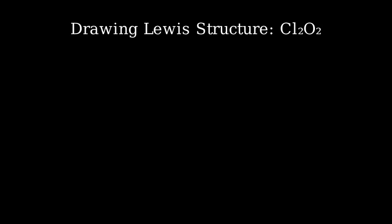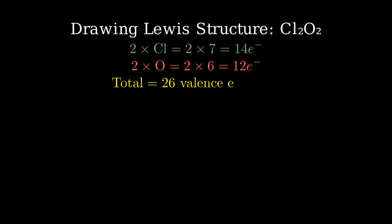First, let's count the total valence electrons. Each chlorine atom has 7 valence electrons, and each oxygen atom has 6 valence electrons. With 2 chlorine atoms and 2 oxygen atoms, that's 2 times 7 plus 2 times 6, giving us 26 total valence electrons.